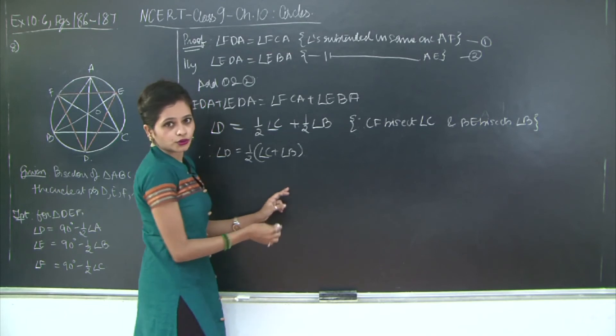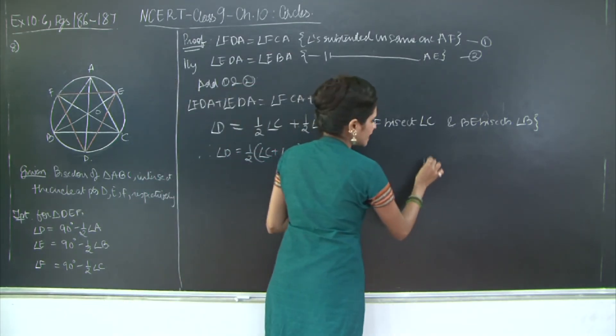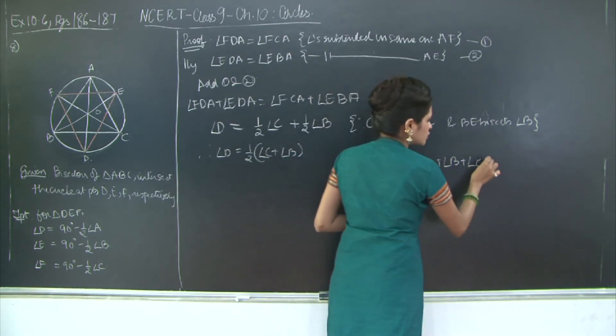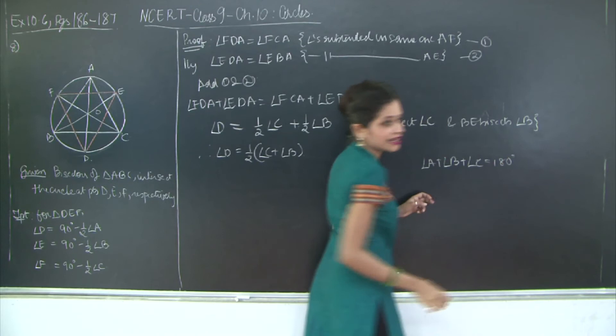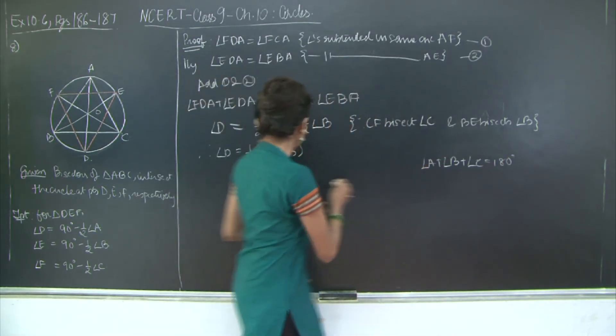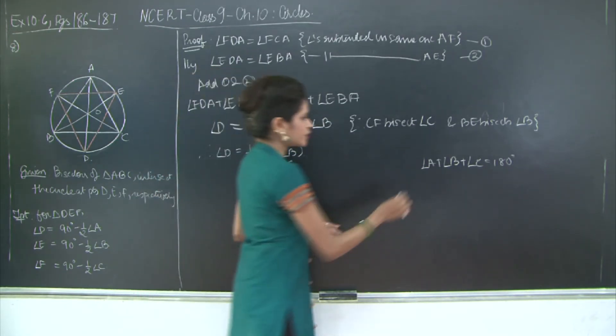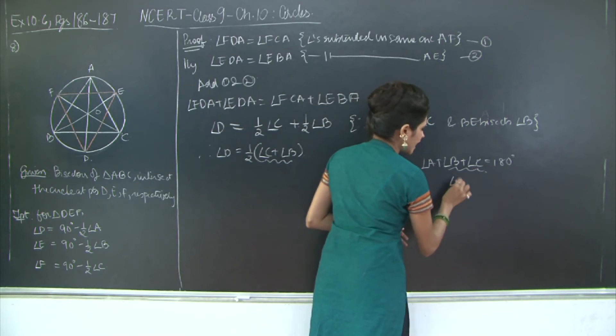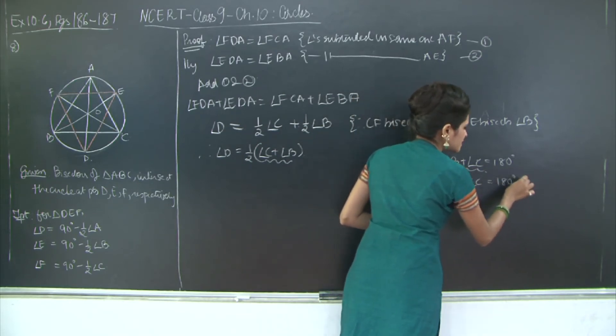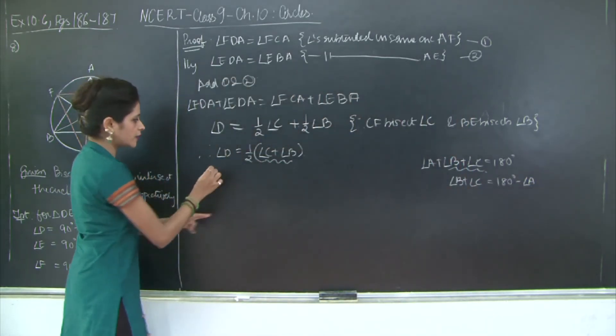So now if you notice you have angle C plus angle B. You have angle A plus angle B plus angle C is equal to 180 degrees for triangle ABC. So now you have only B plus C, so this will be angle B plus angle C is equal to 180 degrees minus angle A. So here I am just going to substitute that value.